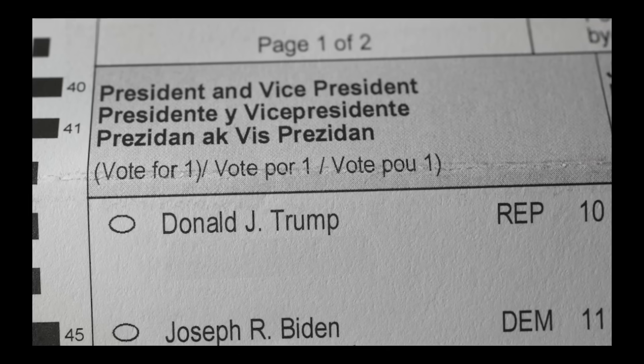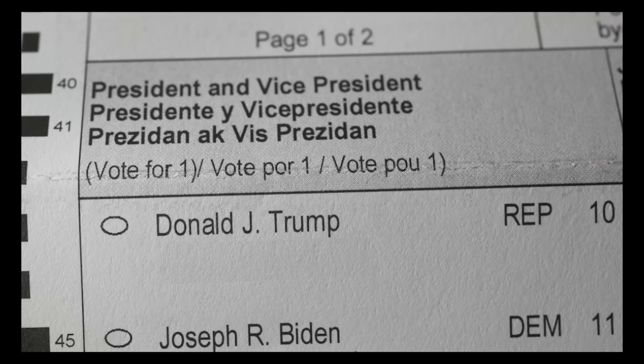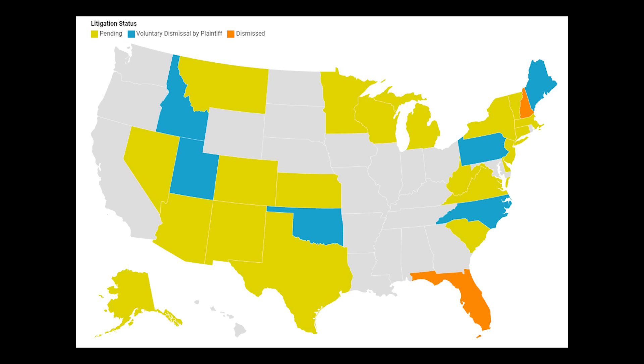A lot of people do not realize that there are a lot of court cases going on right now in the U.S. to determine whether to take Donald Trump off the ballot. Here's a map showing all the states containing court cases against Donald Trump. Twenty-eight states have cases.